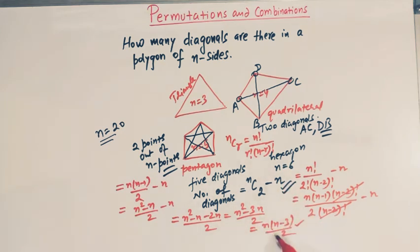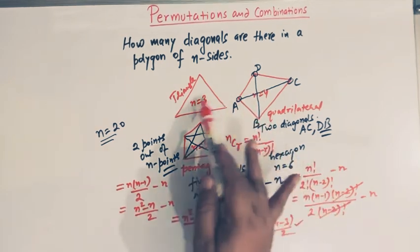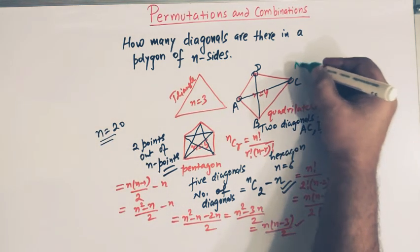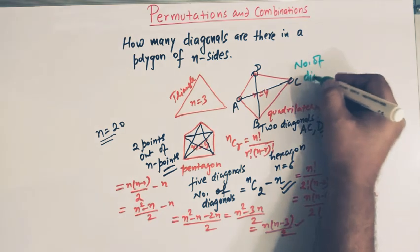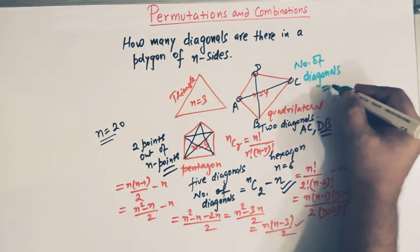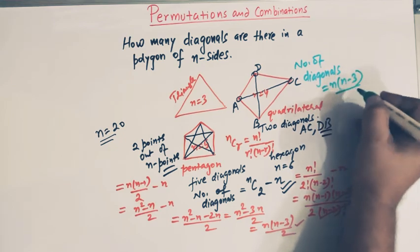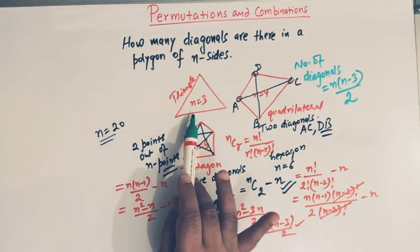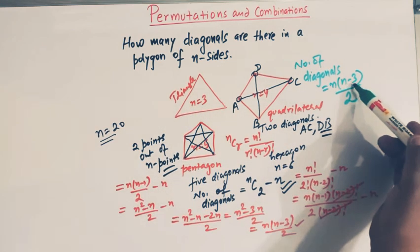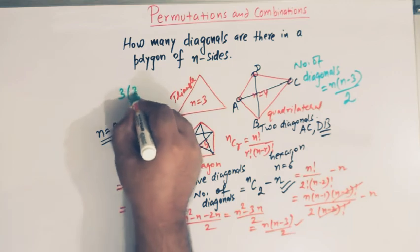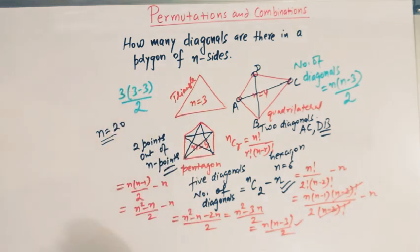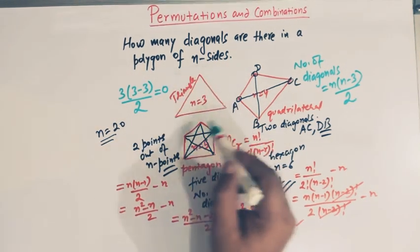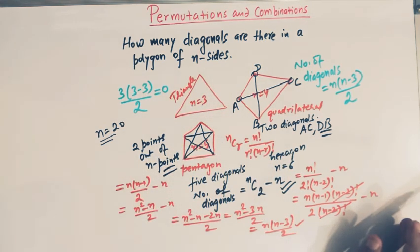So the formula for the number of diagonals of a polygon of n sides is n(n−3)/2. Let us apply this to the polygons we discussed. For a triangle, n is equal to 3, so we get 3 times (3−3) divided by 2, and since 3−3 is 0, the result is 0. So a triangle does not have any diagonal.